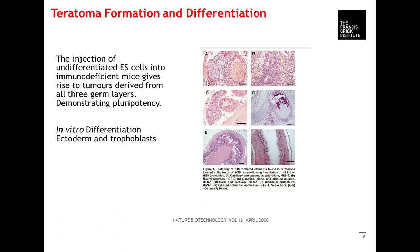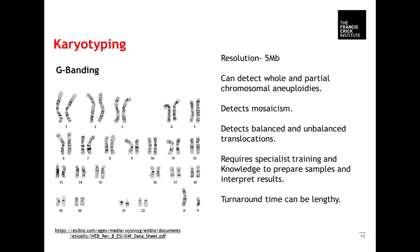Karyotyping is very important, though it often gets neglected because it's quite expensive. G-banding was the main approach originally used — another gold standard. The resolution of G-banding isn't particularly high, but it can detect whole and partial chromosomal aneuploidies, mosaicism, and both balanced and unbalanced translocations. However, it requires specialist training to prepare samples and interpret results. The turnaround can be lengthy, and if you don't have a karyotyping service within your institution, you have to send out for it, which can take a while.